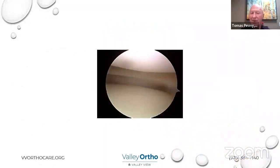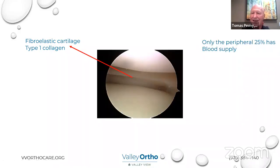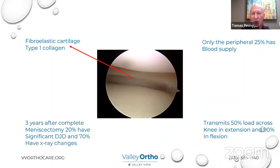Now let's look at the meniscus again. The meniscus cartilage is fibroelastic cartilage with type 1 collagen — a little different from the type 2 collagen cartilage on the end of the bone. It has very limited blood supply; the inner two-thirds does not have any blood flow. The significance of that is if you have a tear there, it's very unlikely to heal itself. We know that people who lose their meniscus are at much greater risk of developing arthritis or wear and tear of the smooth cartilage down the road.